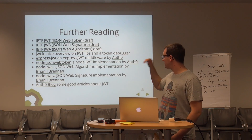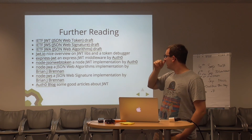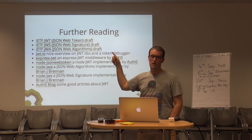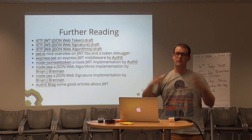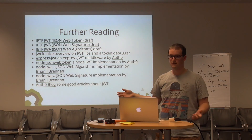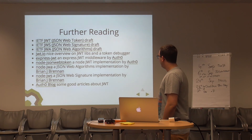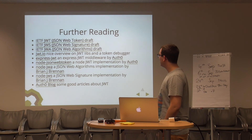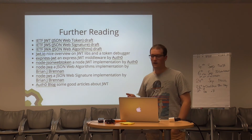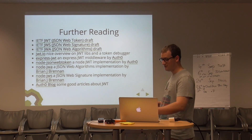This is on GitHub. There's some further reading and a lot of standards. A really nice thing is JWT.io — it's from Auth0. It's a big overview of all JWT libraries and implementations in all languages you can get. The Auth0 blog is also a nice resource if you want to read more about JWT.